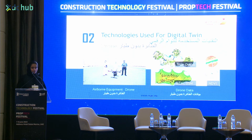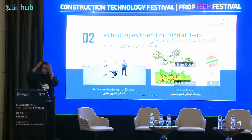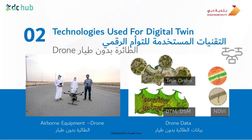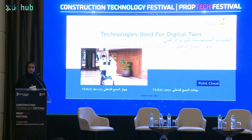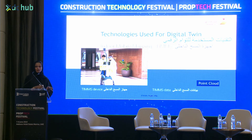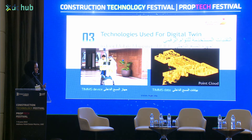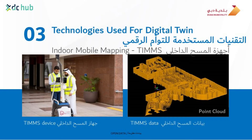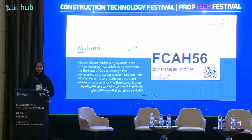Another source of data we are using is drones. We have two drones that are used to create ortho photos, DTM, and DSM. We have another device for scanning indoor models of buildings, which creates a point cloud and panorama that we can convert into 3D modeling. We are using different sources in order to make sure that our Digital Twin is up to date and covering all aspects.